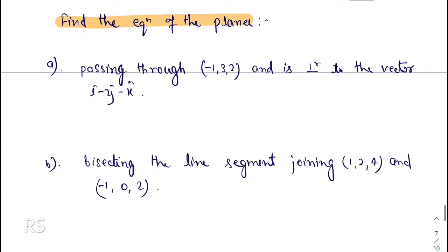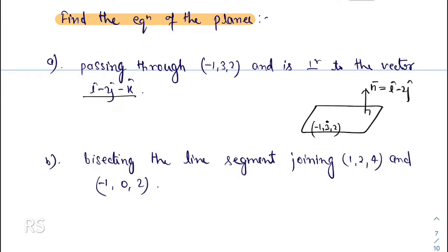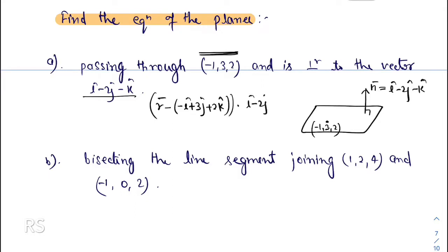Now let us solve some questions on writing the equation of a plane under different given conditions. The first: the plane passes through (−1, 3, 2) and is perpendicular to the vector i − 2j − k. The point is (−1, 3, 2) with position vector −i + 3j + 2k, and the normal vector is i − 2j − k. The equation is: (r − (−i + 3j + 2k)) · (i − 2j − k) = 0.